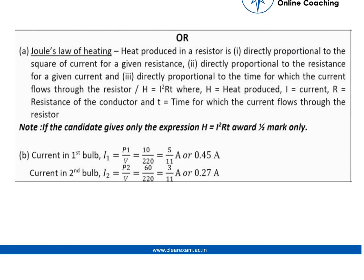The solution of second part is Joule's law of heating. We all know that heat produced in a resistor is directly proportional to the square of current (I²), directly proportional to the resistance (R), and directly proportional to the time for which the current flows through the resistor.